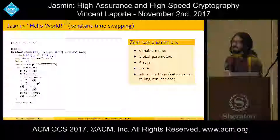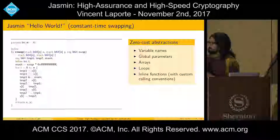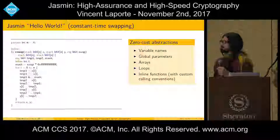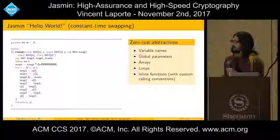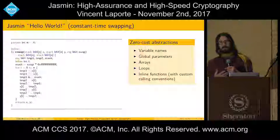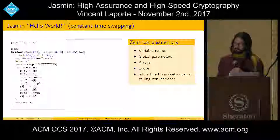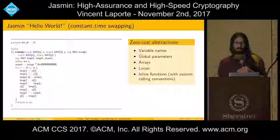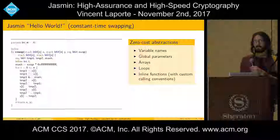Let me start by briefly presenting the language. This is a kind of hello world of Jasmine — it will not print anything, but it's a simple program that we may want to write. It is doing constant time swapping. It takes as argument two arrays of values x and y of size n, where n is a global parameter, and a Boolean swap. Depending on the value of swap, this function will either return its input unchanged or swapped, and this is implemented in constant time — meaning the exact sequence of instructions executed does not depend on the values of any of the arguments.